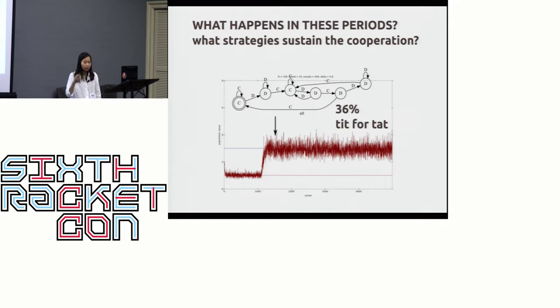One question to ask is what happened in this cooperation period, and what kind of strategies that are able to sustain cooperation in the societies. I will show here just some examples, very brief machines that were popular in some cycles. In this first example, we have here this machine that looks complicated, but actually it is a tit for tat because it starts to play cooperate. If you cooperate, it stays in cooperate. If you defect, it jumps to the defect state, and so on and so forth.